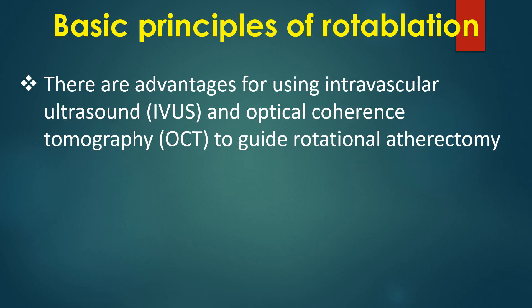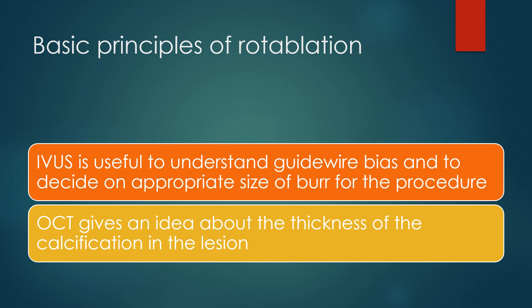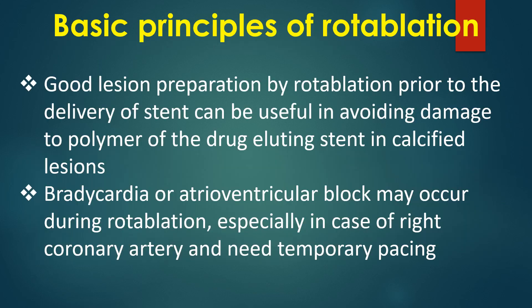There are advantages to using intravascular ultrasound and optical coherence tomography to guide rotational atherectomy. IVUS is useful to understand guide wire bias and to decide on appropriate burr size. OCT gives an idea about the thickness of the calcification in the lesion. Good lesion preparation by rotablation prior to stent delivery can be useful in avoiding damage to the polymer of drug-eluting stents in calcified lesions.